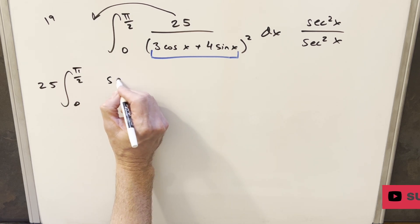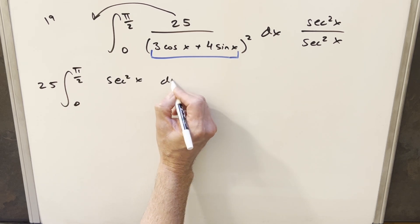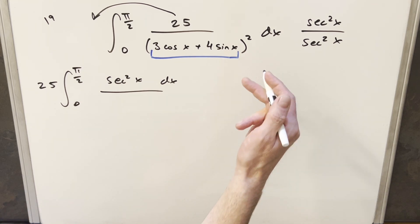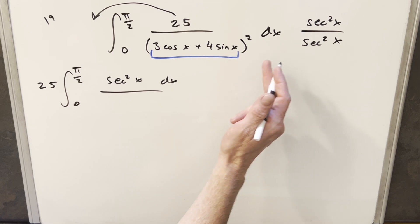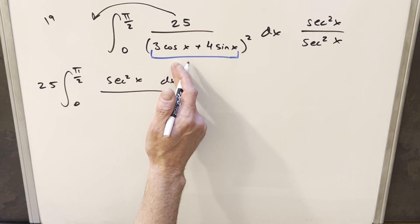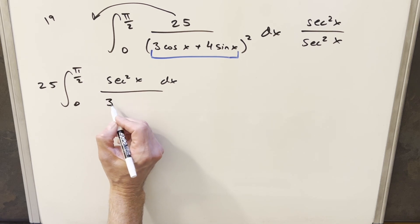So in the numerator we're going to have just secant squared x dx. Now in the denominator secant squared x is the same as 1 over cosine squared x. When we bring it inside of the square, it's going to be just multiplying the cosine x. So for this first term we're just going to have a 3 here.